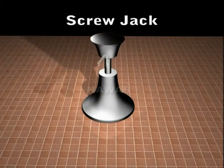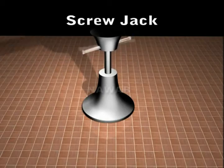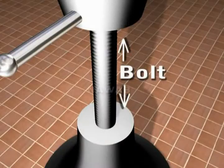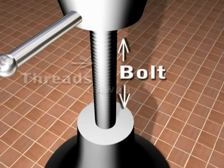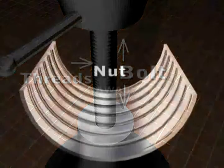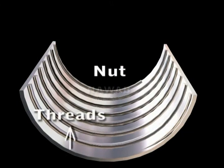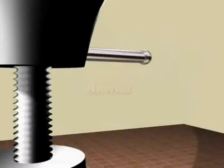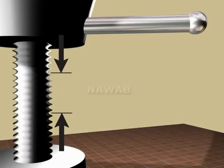A screw jack is a simple machine. It has two parts. One part is called the bolt, which is a strong metallic slender rod whose outer surface contains threads. The other part is called the nut, whose inner surface contains threads similar to the outer surface of the bolt. The vertical distance covered by completing one full cycle is called the pitch.